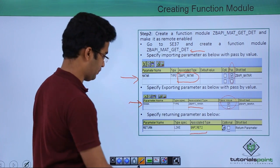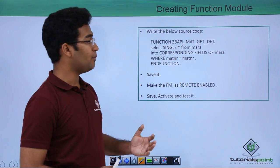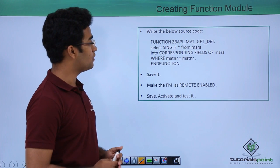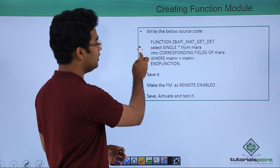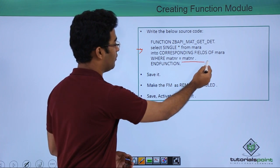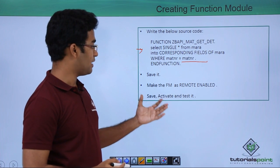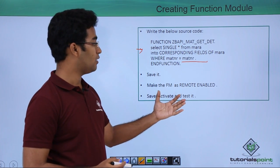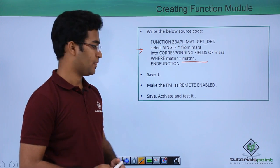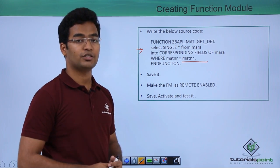At the last we have to specify our return parameter, and the return parameter should be of the type BAPIRET2. In the source code tab we have to write our code: SELECT SINGLE * FROM MARA INTO CORRESPONDING FIELDS OF MARA WHERE MATNER equals MATNER. We have to save it, and in the attributes tab there is a remote enabled radio button — we check it, save it, check it, and activate it. This way we have created our remote function module.